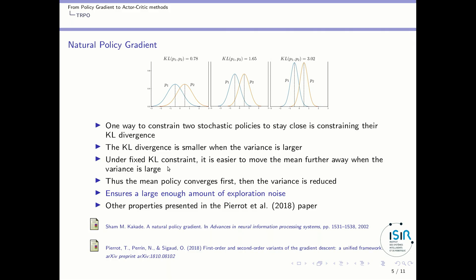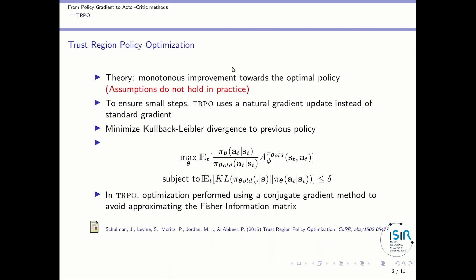In practice, when you perform gradient updates on your policy under a Kullback-Leibler constraint, the mean policy will converge first toward the other one, and then the variance will be reduced — because if you start by reducing the variance, you cannot move the policy anymore since your KL divergence will increase. So you keep the variance large, which means you keep exploring. This ensures a large enough amount of exploration noise until you converge to a somewhat optimal policy, and then the exploration is reduced. TRPO — Trust Region Policy Optimization — is presented in its paper with a theoretical part providing proof for monotonic improvement toward the optimal policy, though this proof is based on assumptions that do not hold in practice.